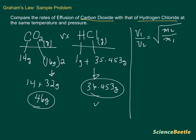What I've done here is just written the equation for Graham's Law on the right-hand side. We're going to use V1 to represent carbon dioxide. So equals V1, and over here we're going to say equals V2, or velocity 2.